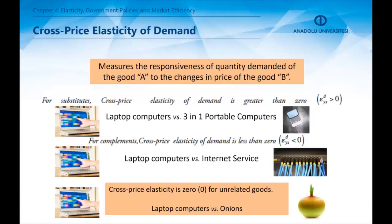Cross price elasticity is the third type of elasticity. It measures the quantity demanded of good A against the change in the price of good B. Cross price elasticity is positive for substitutes. Conversely, for complements, the cross price elasticity is negative.